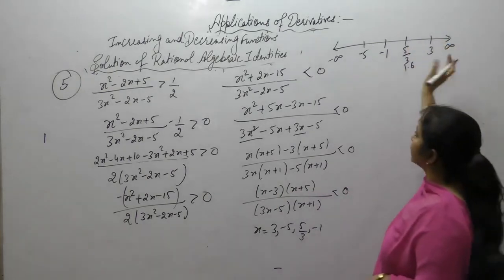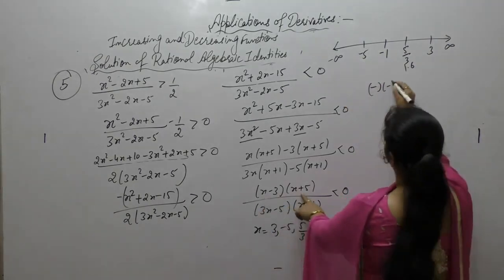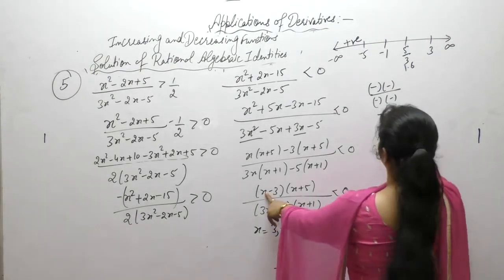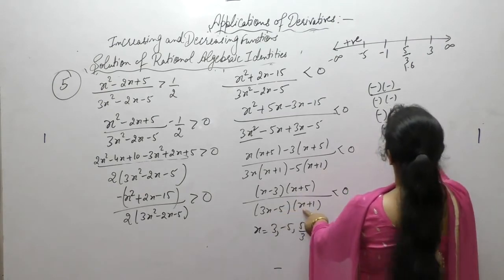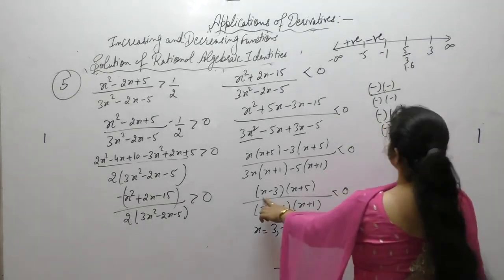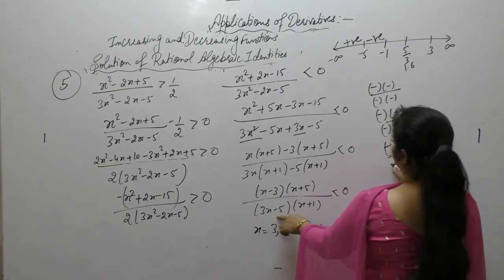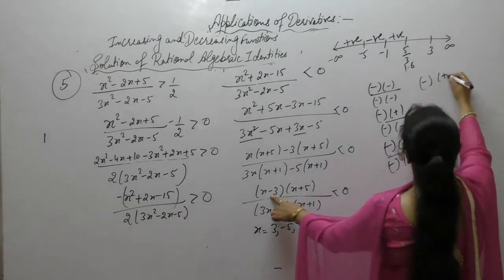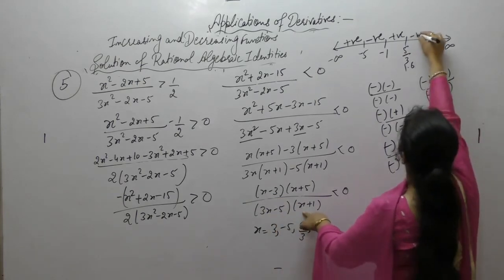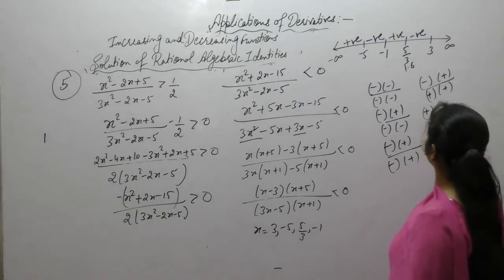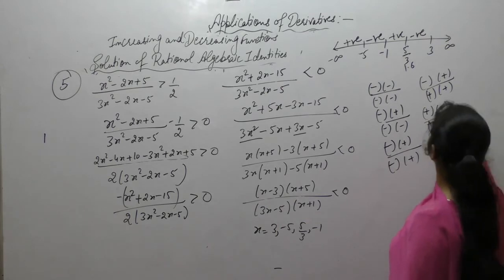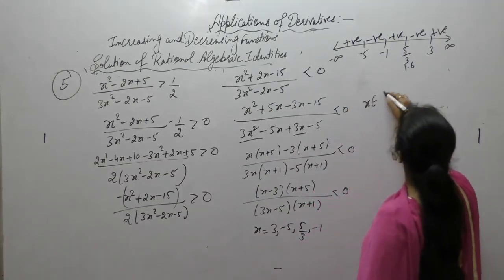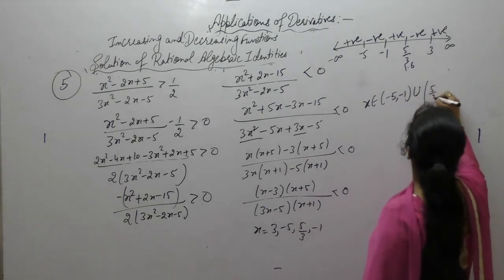Checking sign for each interval on number line with points minus 5, minus 1, 5/3, 3: minus infinity to minus 5 (use minus 6): positive; minus 5 to minus 1 (use minus 4): negative; minus 1 to 1.6 (use 1): positive; 1.6 to 3 (use 2): negative; 3 to infinity (use 4): positive. Since less than 0, solution is x ∈ (−5,−1) ∪ (5/3, 3).